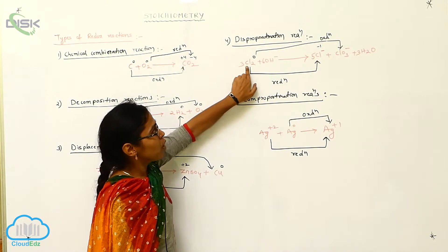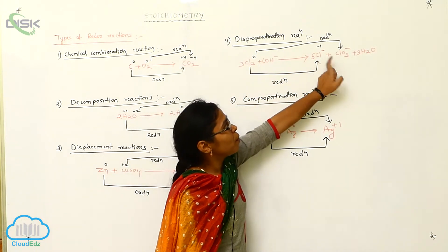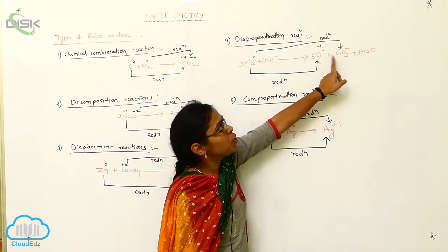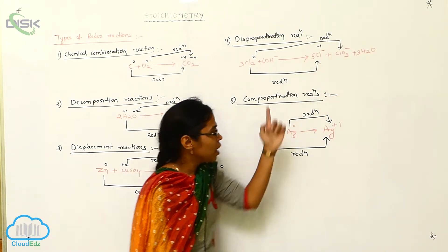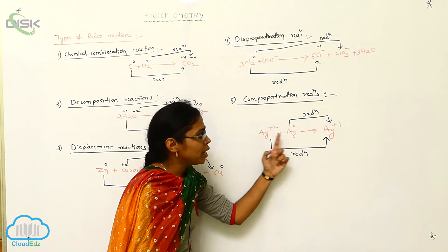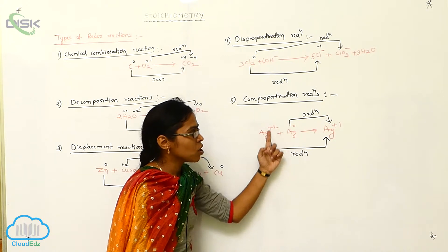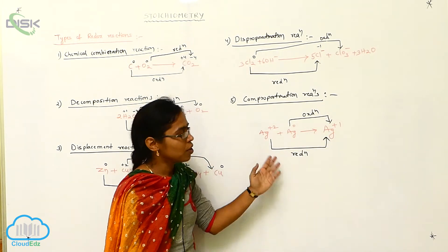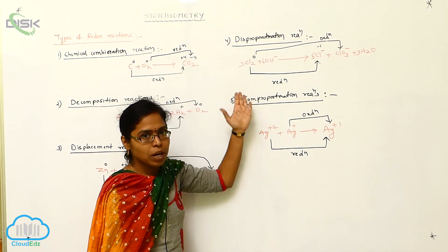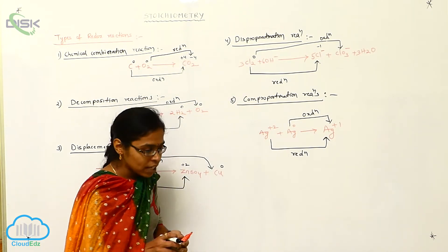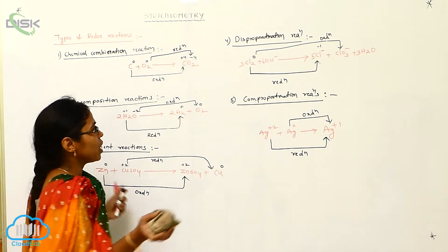Here, only one group will give two products with different types of oxidation numbers. In this one, two different reactants having different oxidation numbers give the same oxidation number of products. That's why both are the total opposite reactions. So this is the information about the redox reaction.